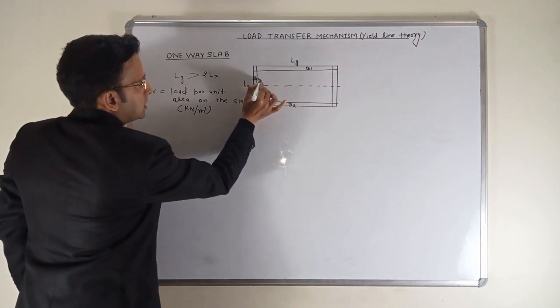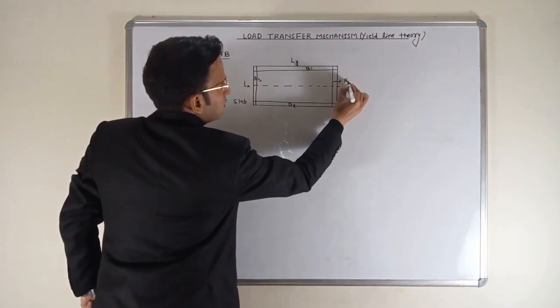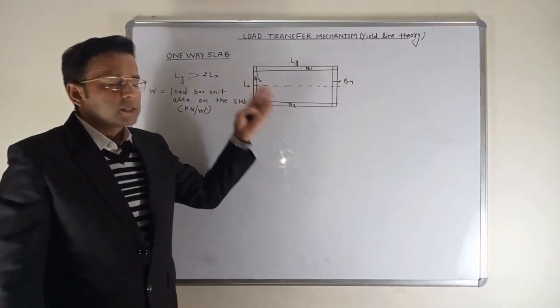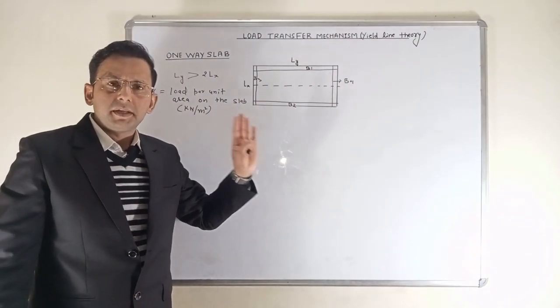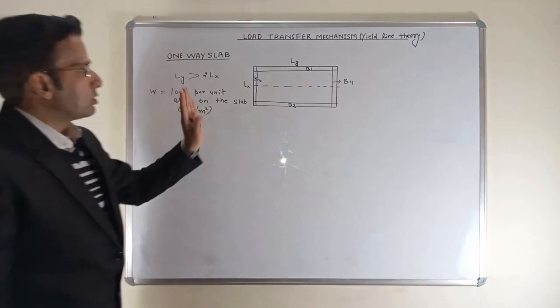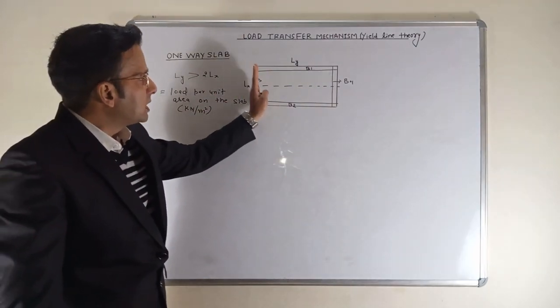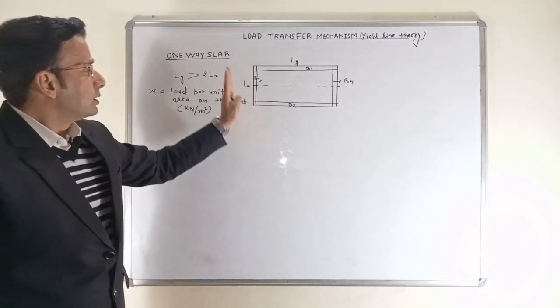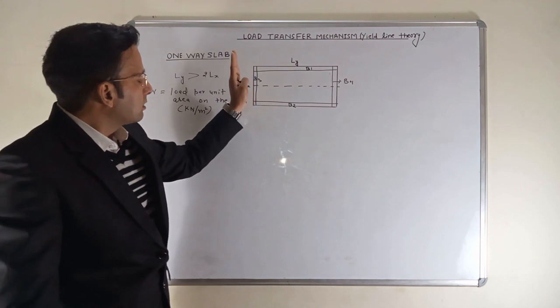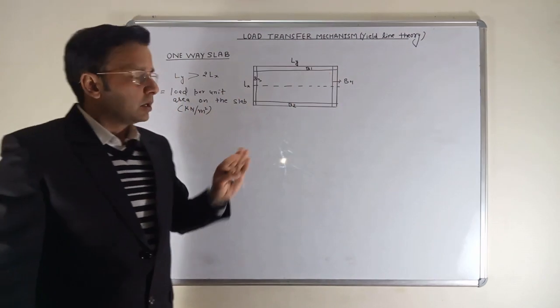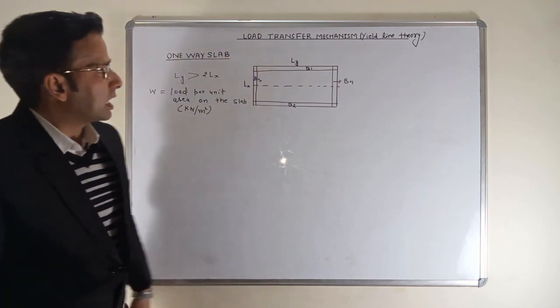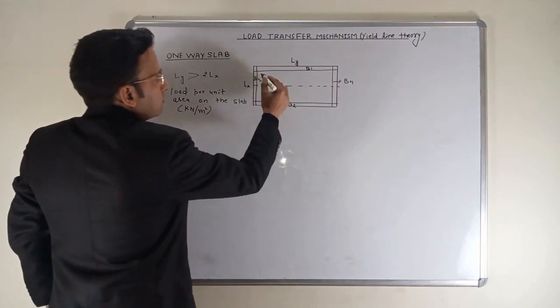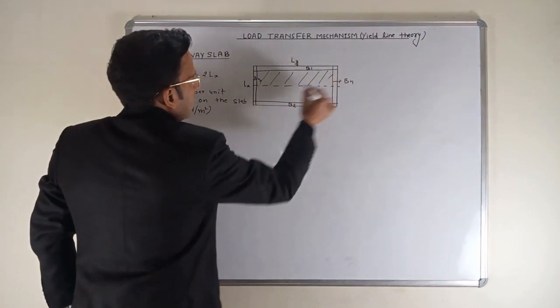This is beam B1, this is beam B2, this is beam B3, and this is beam B4. The load transfer mechanism of one-way slab is very simple. It is assumed that no load transfers on the beam B3 and B4. Just mind it, just remember. Again I say no load transfer on the shorter dimension of the slab.